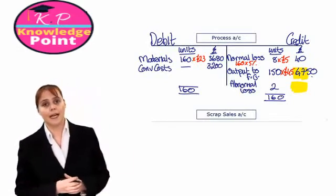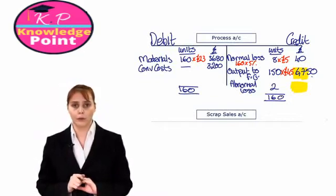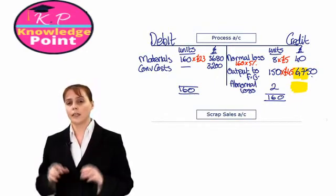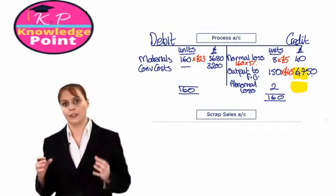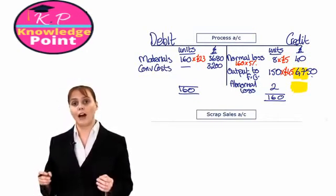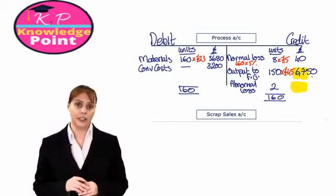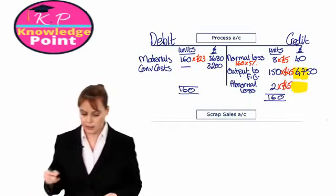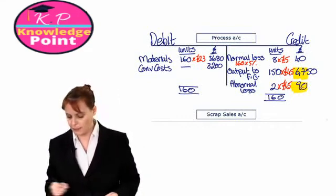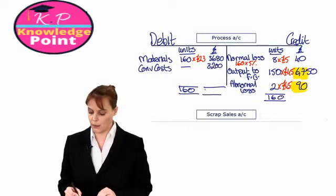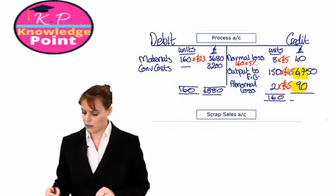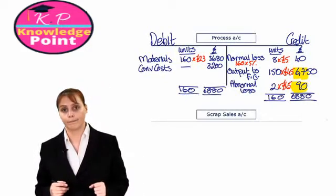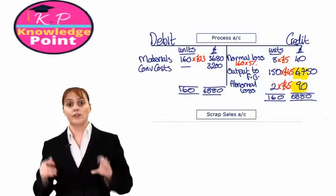Our last step is to calculate the total value of our abnormal loss. In the process account, abnormal loss is always valued at the cost per unit value of £45. So we put a value of £45 on each of these 2 units, giving a total value of £90. If we add everything up, we should balance and get £6,880 on each side.